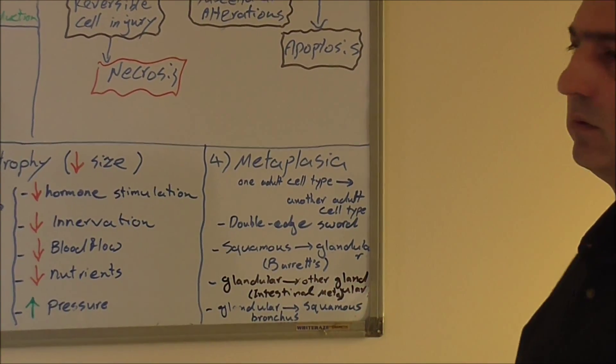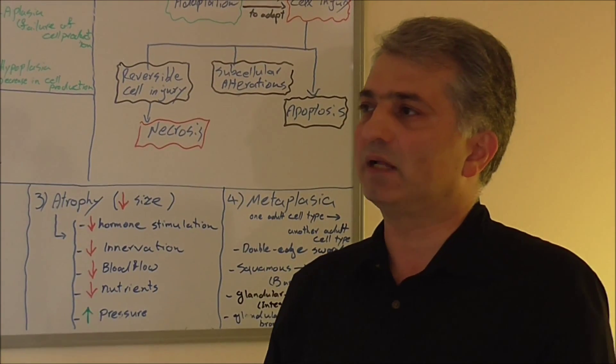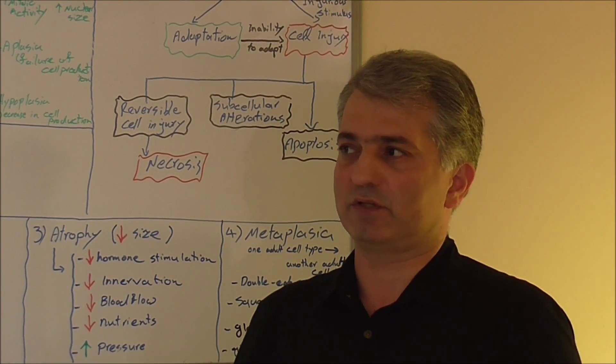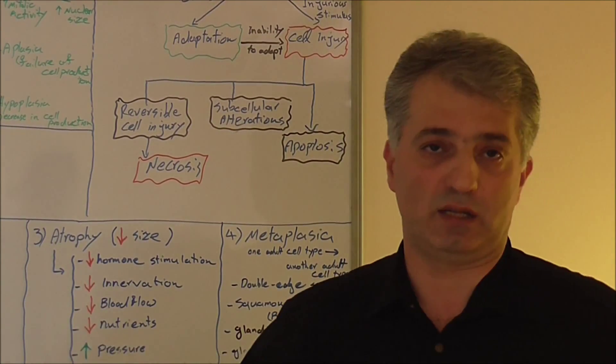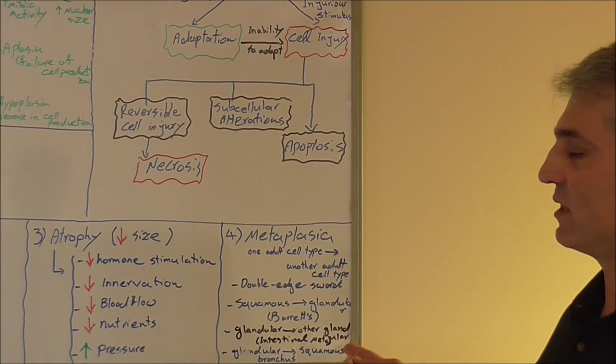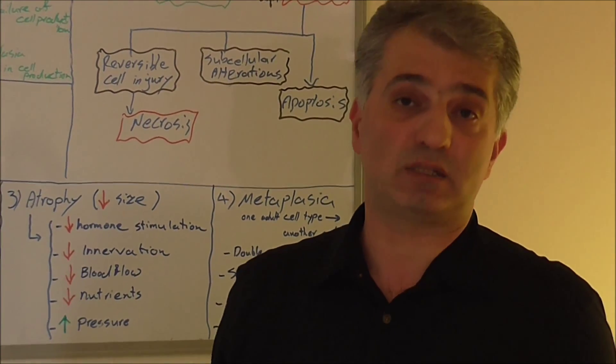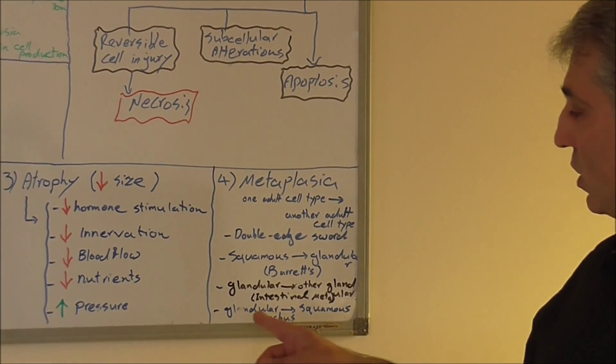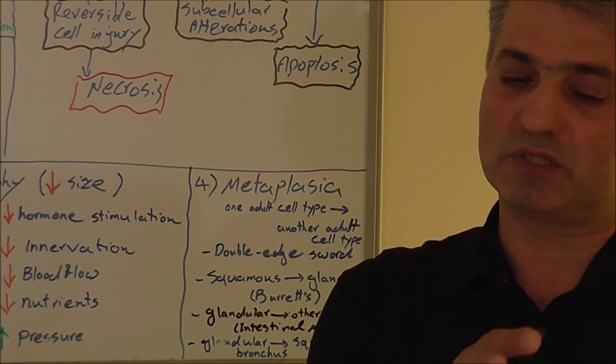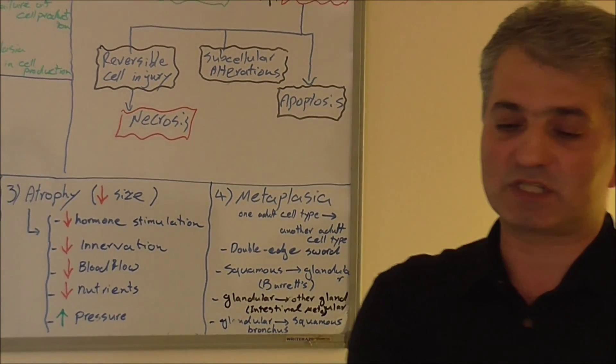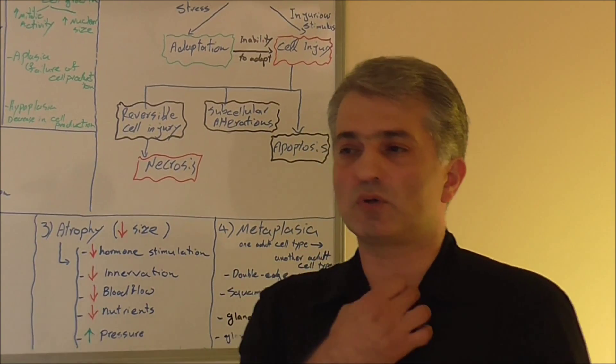Some other: glandular to glandular. When you do a study in stomach, you will see some type of gland which belongs to intestine instead of stomach. This is also a type of metaplasia. We call it intestinal metaplasia. What can cause that? Helicobacter pylori can cause that. Or glandular to squamous. That means in the normal anatomy, in histology, we have glandular cells, but because of stress that cell changes to squamous, like the bronchus.